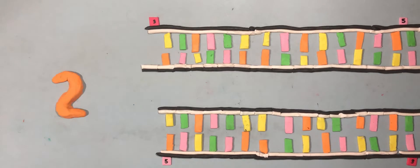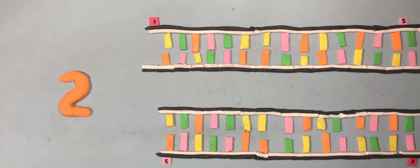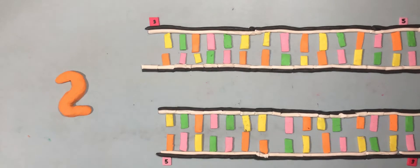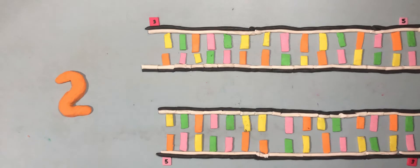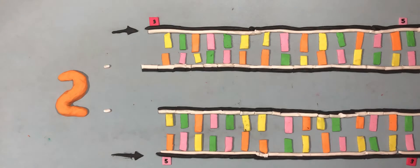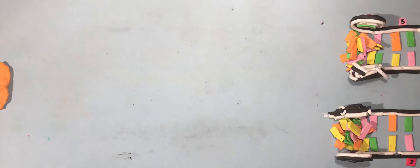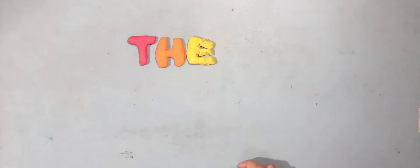At the end of replication, you have two identical double helix DNA molecules from your one original double helix DNA molecule. We call this semi-conservative because the two copies contain one old original strand and one newly made one. And that's it. Thanks for watching.